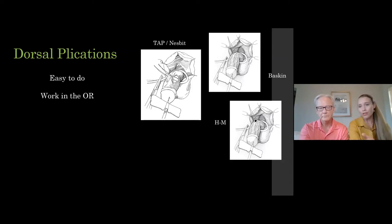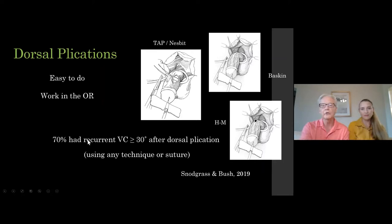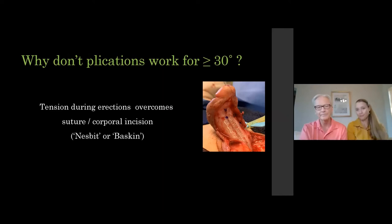We looked at the group of patients who had chordee excision — 83% had persistent or recurrent curvature. For dorsal plication, 70% had persistent or recurrent curvature. It didn't matter which variation you used or which suture — they all had persistent or recurrent curvature. Usually with the suture right there in the correct spot, you can still see the bending.